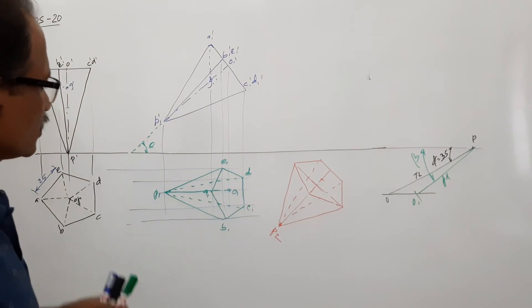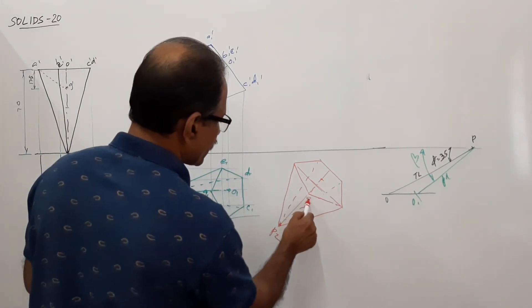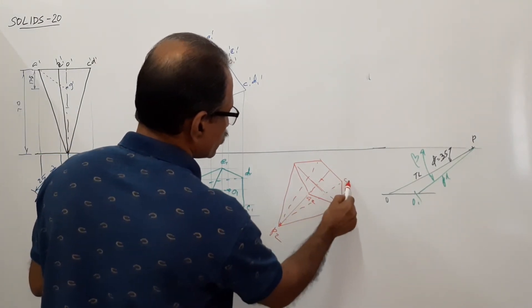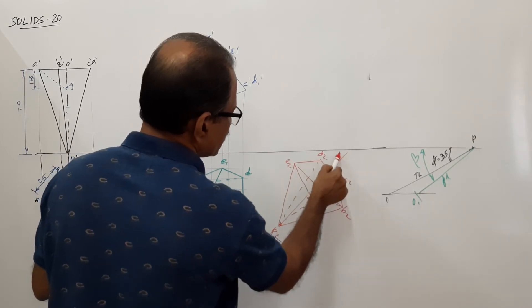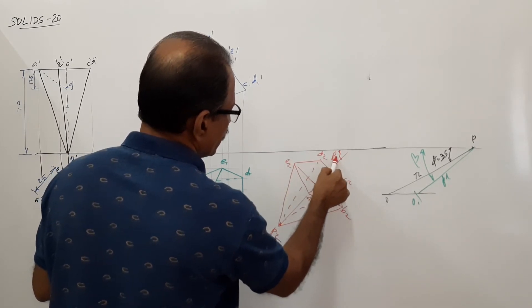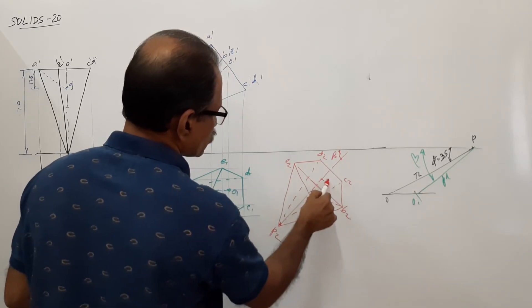Got all the points? Name them. A2, B2, C2, D2, E2. What is this? This is beta. This is O2.